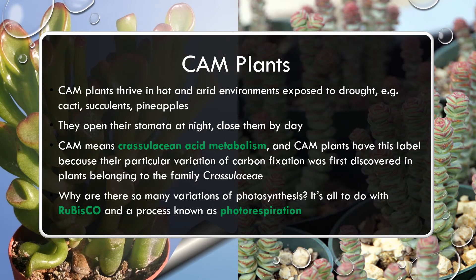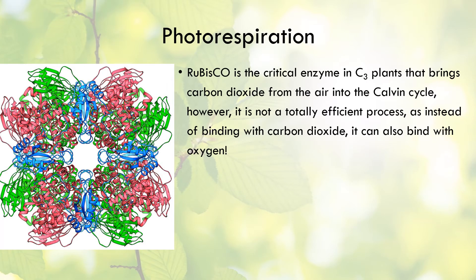Why are there so many different variations of photosynthesis? It's all to do with the Rubisco enzyme and a process known as photorespiration. Photorespiration is the enemy of photosynthesis - we do not want it to occur. Rubisco has an affinity for both carbon dioxide and oxygen, and this is the core problem that has driven CAM and C4 plants to develop mechanisms to avoid photorespiration.